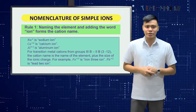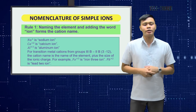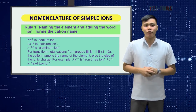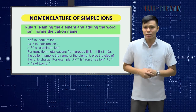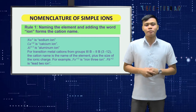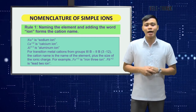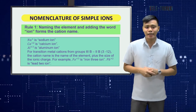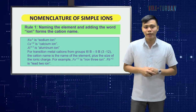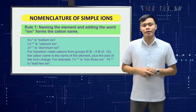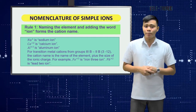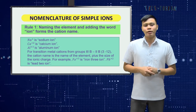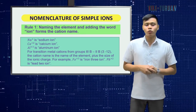There are only two rules for naming simple ions. Rule number 1: the cation name is formed by naming the element and adding the word 'ion.' So Na⁺ is sodium ion, Ca²⁺ is calcium ion, and Al³⁺ is aluminum ion. For transition metal cations from groups 3B to 2B, the cation name is the name of the element plus the size of the ionic charge. For example, Fe³⁺ is iron(III) ion, and Pb²⁺ is lead(II) ion.